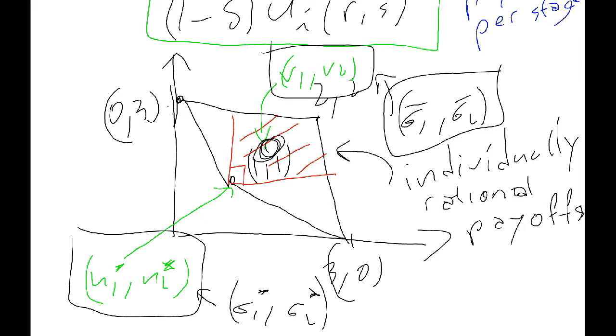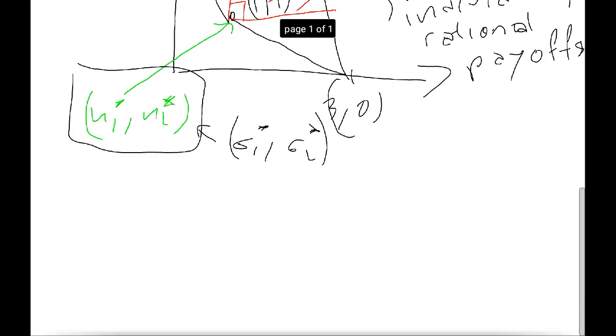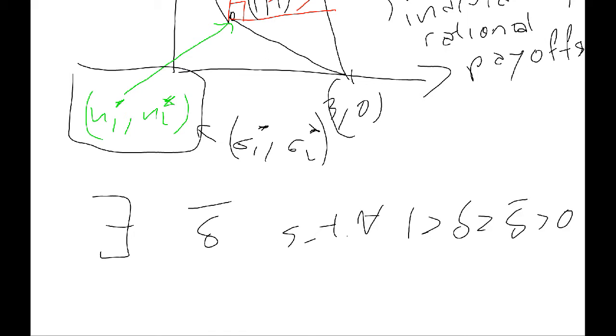Then there exists a delta bar such that for all delta bigger than that delta bar, there exists a subgame perfect Nash equilibria that gives the payoffs V1, V2. Okay? And this is the theorem we're trying to prove, well, we are going to prove now, all but briefly.